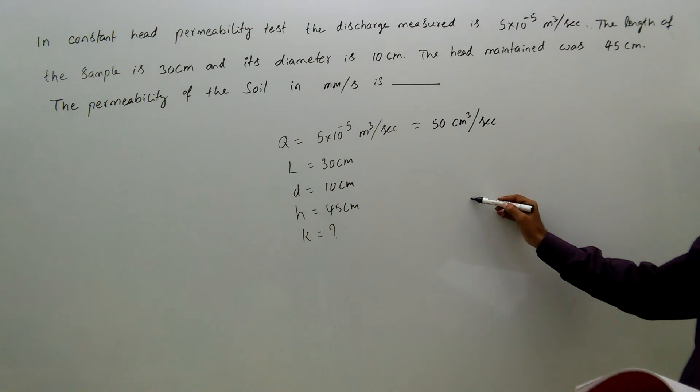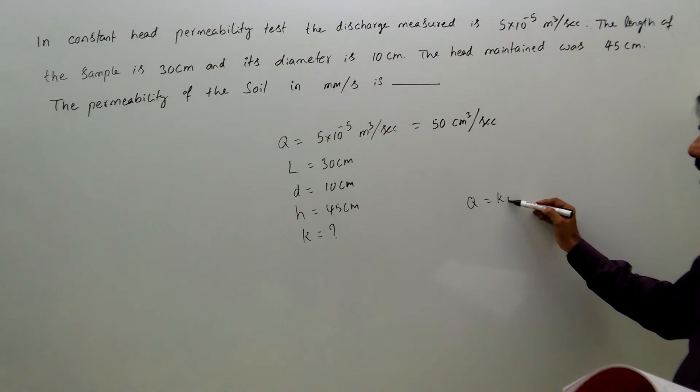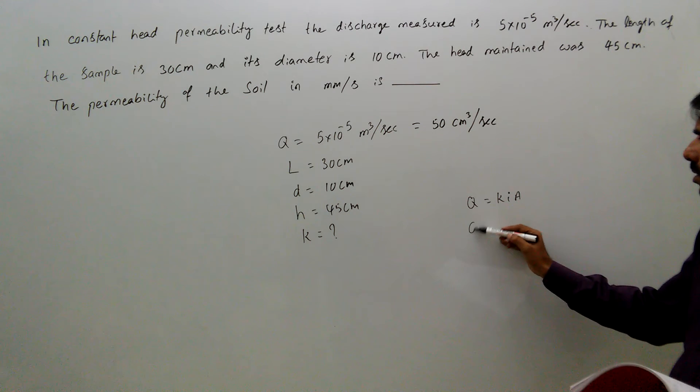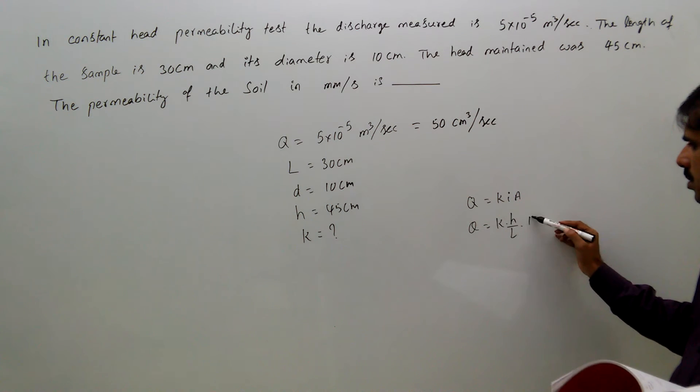We know Q = k×i×A, that is Q = k×(h/L)×(πd²/4).